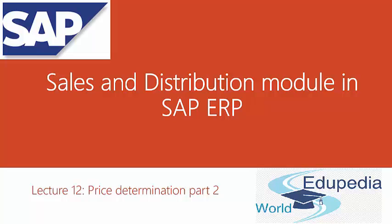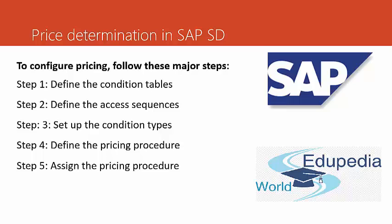Hello everyone, and thank you for watching Edupedia World videos. In this lecture, we will continue to talk about price determination in the Sales and Distribution module of the SAP ERP system. In the previous lecture, we reviewed the first steps in price determination: we defined the condition tables, we defined the access sequences, and we set up the condition types. In this lecture, we will learn how to define the pricing procedure and how to assign the pricing procedure.